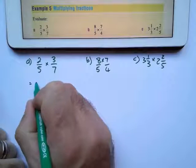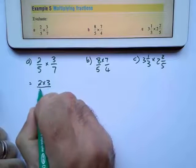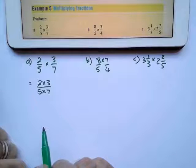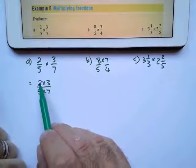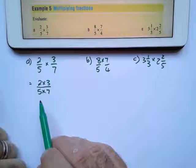Our first rule is to write it as one fraction. So it's going to be 2 times 3 divided by 5 times 7. Then I'm going to simplify before I multiply, which means I'm going to see if there's anything that can cancel or that can divide both bottom and top.